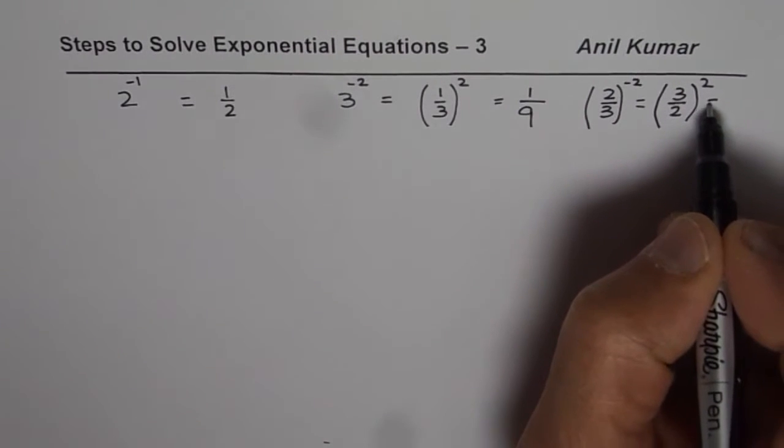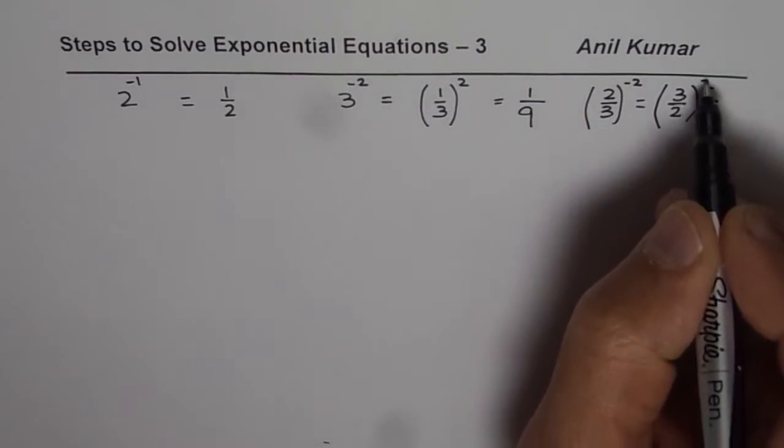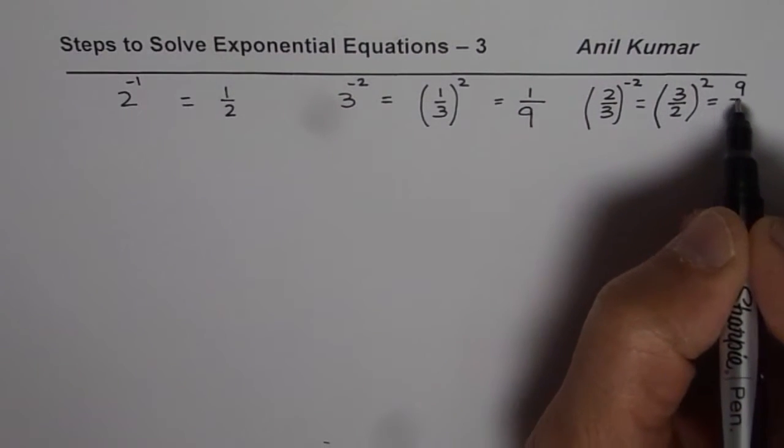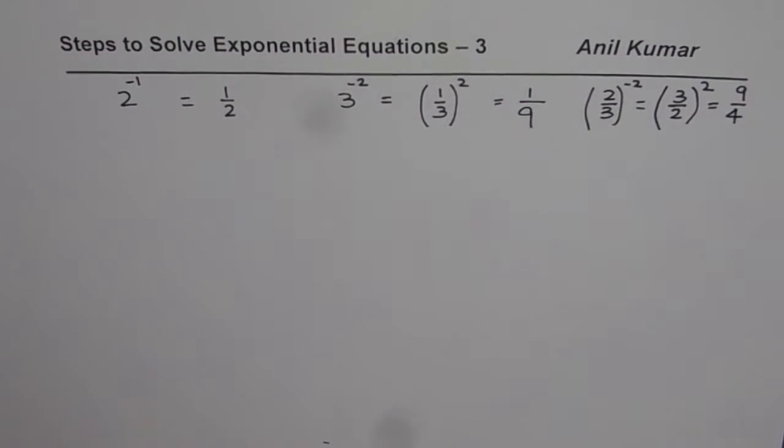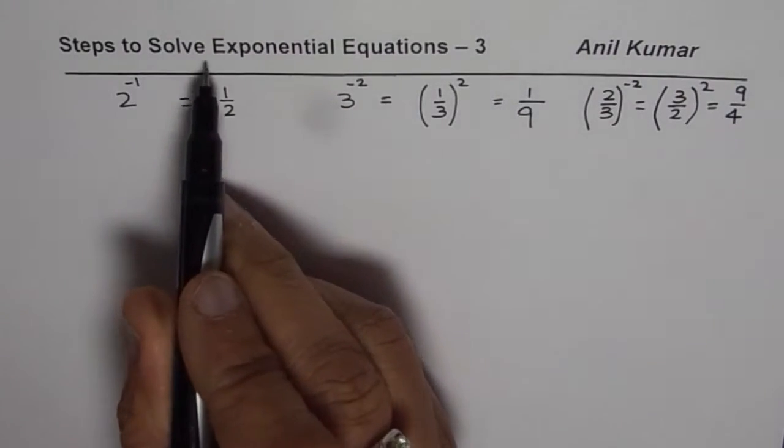And then, you know, 3 square is 9, 2 square is 4, it is 9 over 4. So that is kind of base which you need to understand before we get into solving equations.